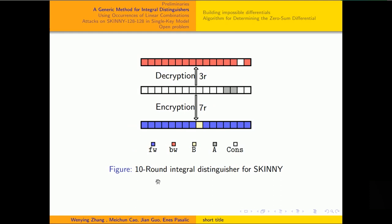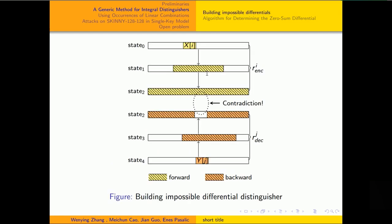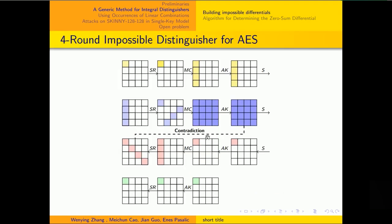Here is a 10-round integral distinguisher for SKINNY. We use the 7-round integral distinguisher and add 3 rounds on the top of it. Similarly, we can build impossible differential distinguishers. Here is a 4-round impossible distinguisher for AES.